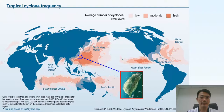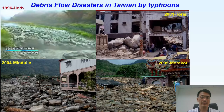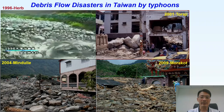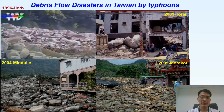This slide shows the tropical cyclone frequencies. As you can see, the dark red represents the high frequency of the tropical cyclone — we call it typhoons. Taiwan is here, and as you can see, we are in the high frequency zones. Every year we have a lot of tropical cyclones, typhoons, which bring a lot of torrential rains, cause a lot of landslides and debris flows. Here are some pictures and a video about the debris flow disasters caused by different typhoon events in our history.